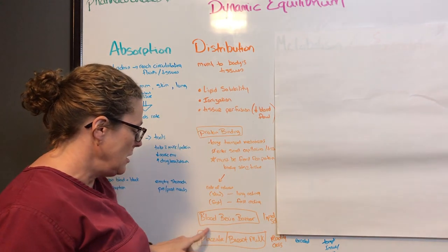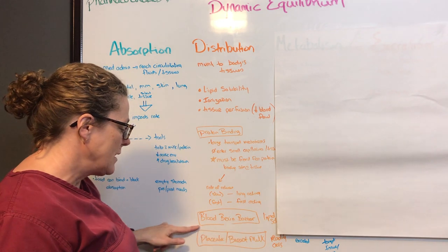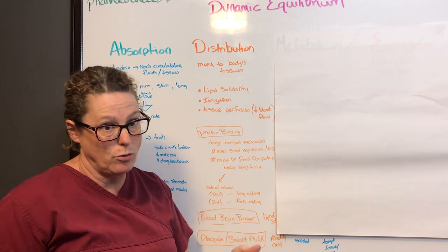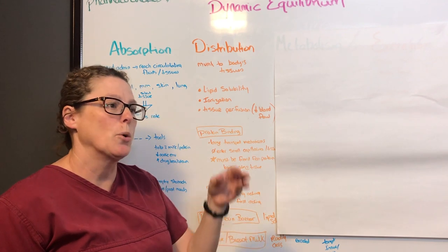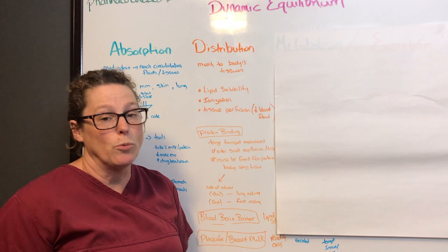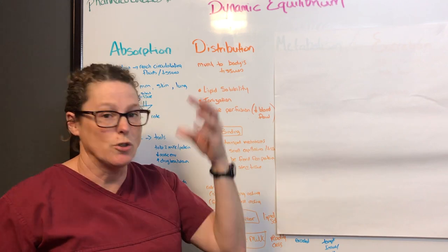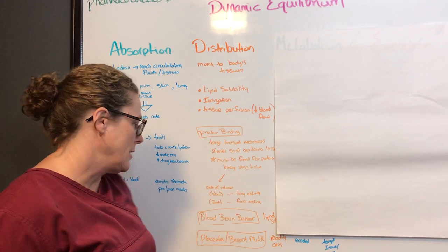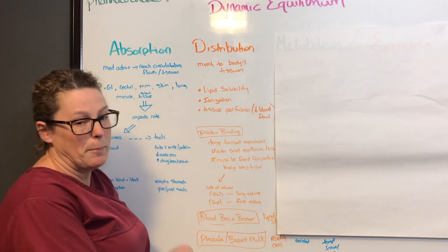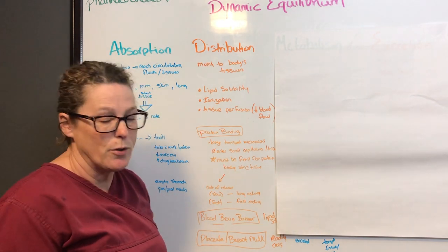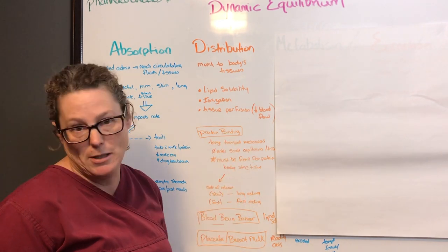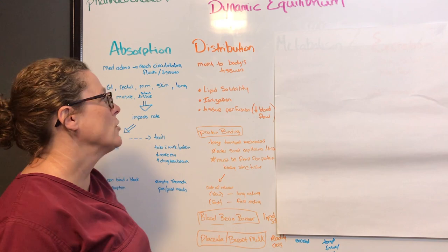Lipid solubility determines the types of drugs that can cross the blood-brain barrier. If a drug is water-soluble it cannot cross that barrier, so lipid solubility is a critical factor for getting medications into the brain when there is infection, swelling, or disease. Medications do readily cross over the placenta and into breast milk — that is not as much of an issue with protein binding or lipid solubility, as they cross over quite naturally.